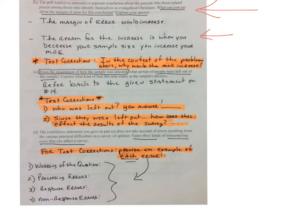From the description, how was the sample selected? What groups of people were left out? You're going to refer back to number fourteen and tell me what groups were left out. And then since they were left out, how does them being left out affect the results of the survey?